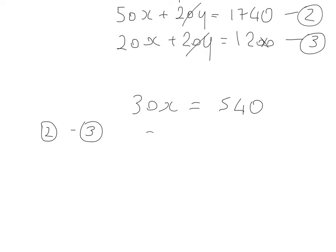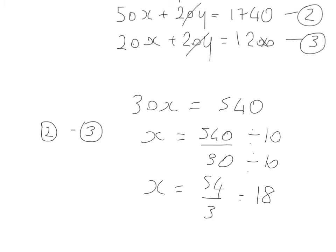So I'll just move that up there. x is equal to 540 divided by 30. Well again, it was in a calculator paper, but it could be done without a calculator. I could divide top and bottom by 10 and that will be 54 divided by 3. 54 divided by 3 is 18.